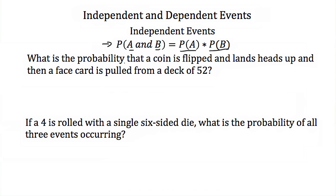So what's the probability that a coin is flipped and lands heads up and then a face card is pulled from a deck of 52? The fact that the coin is flipped and lands heads up has no effect on which card is pulled from the deck. So these are indeed independent events.